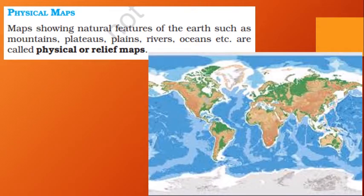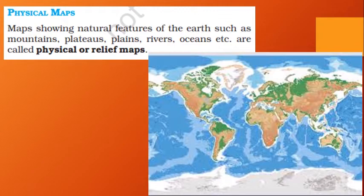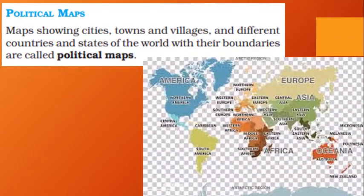A physical map uses only a few colors — green, brown, white, and blue. Green areas represent forests, brown areas represent mountains, and so on. Using these colors we can easily identify mountain areas, plateaus, plains, rivers, oceans, etc. This type of map is called a physical map or relief map.